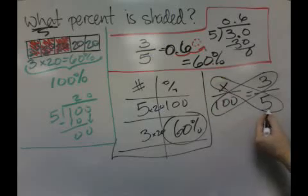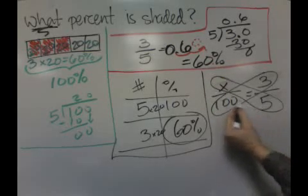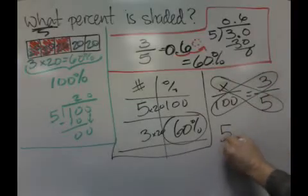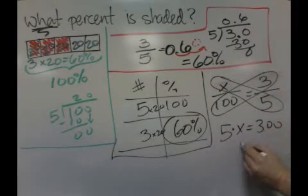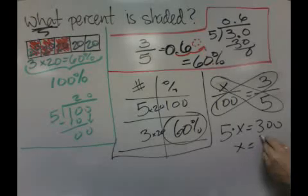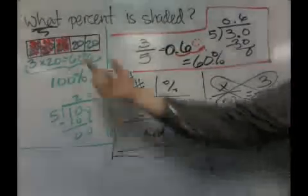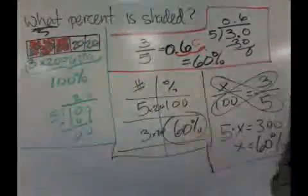I wouldn't because I see an immediate relationship between the 5 and the 100. But if you want to do it the traditional way, you get 5 times X is equal to 300. So X is equal to 60%. So there's your four different ways to show that 3 out of 5 is 60%.